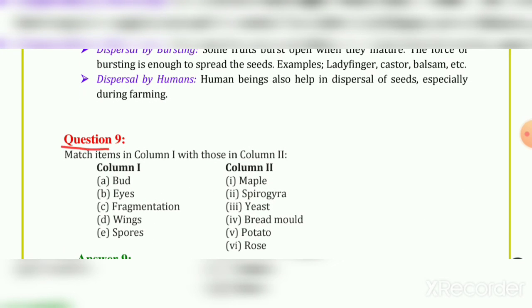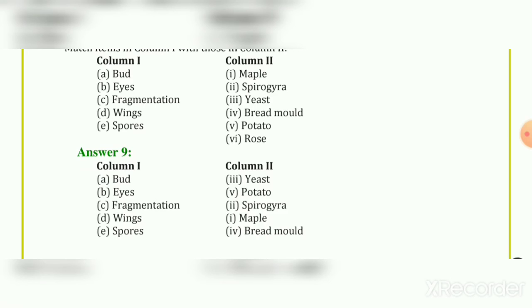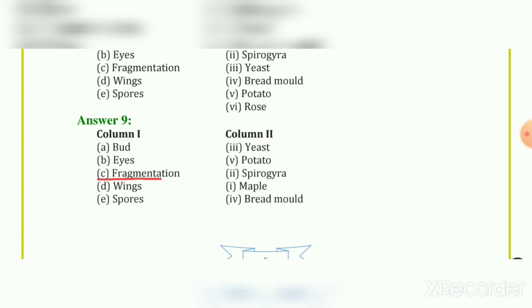Question 9: Match items in Column 1 with those in Column 2. The answers include: bread mold matched with spore formation.